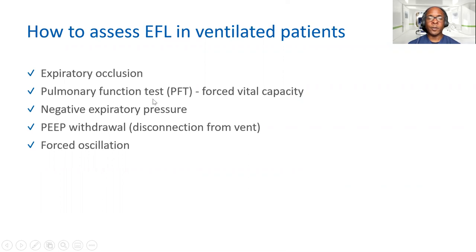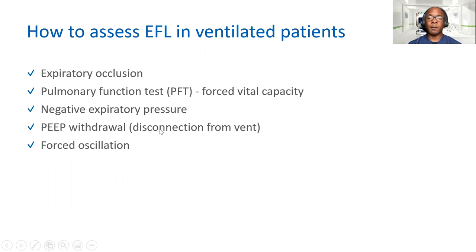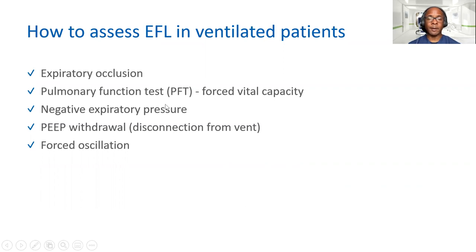So how do we assess expiratory flow limitation? First, assess whether the patient has any intrinsic auto PEEP. We can also do PFT testing if the patient can tolerate it, or use the negative expiratory pressure technique. Maybe PEEP is too high — since PEEP is a resistor, we can decrease it or take the patient off the ventilator to see if their lungs can empty. There's also a technique called forced oscillation, where a speaker is connected to the patient delivering five hertz to assess flow limitation. The problem is that patients may not tolerate some of these, and forced oscillation is difficult to implement.